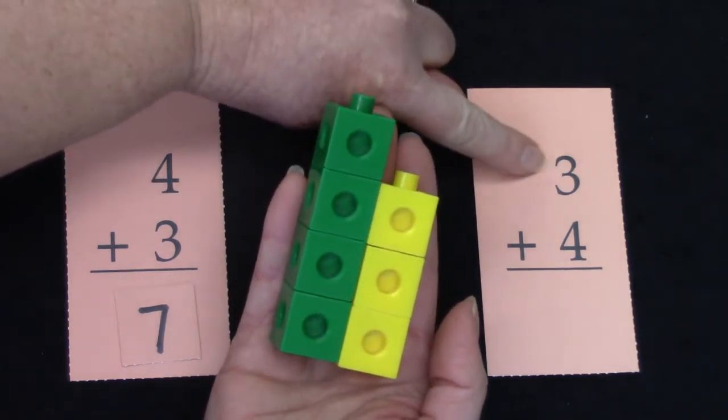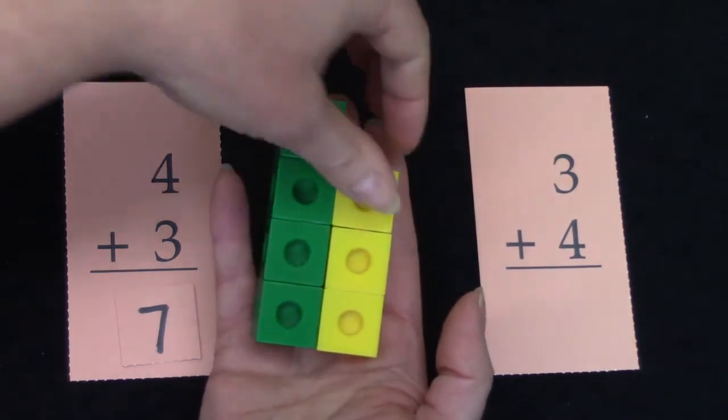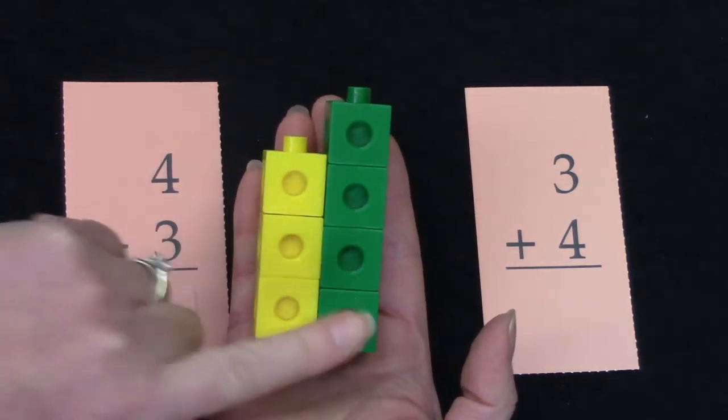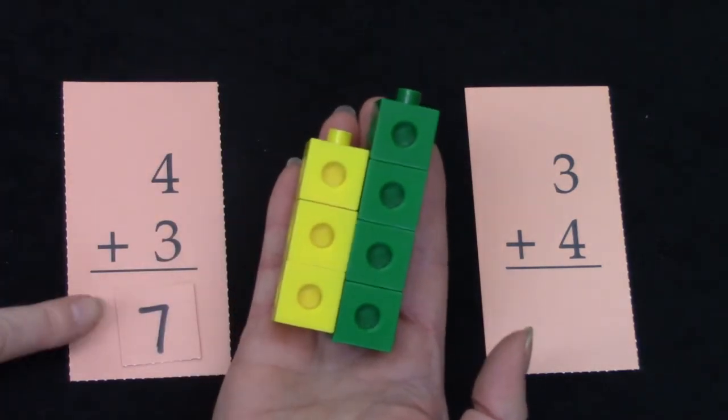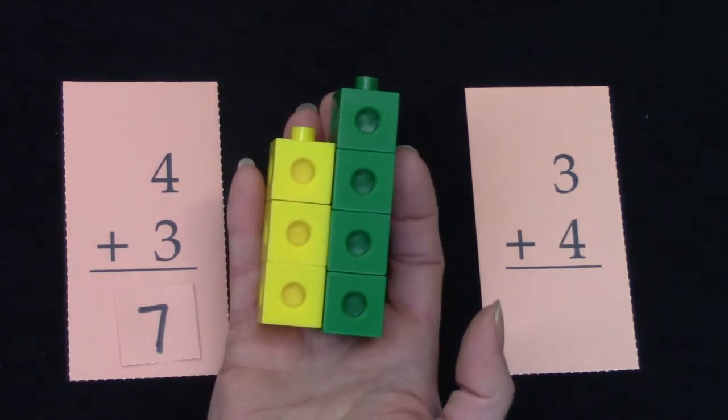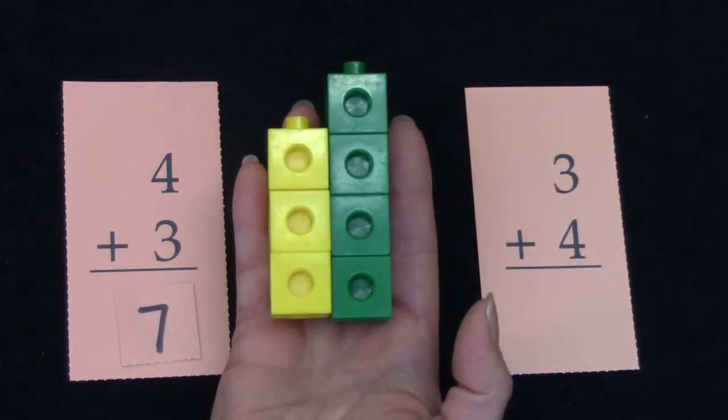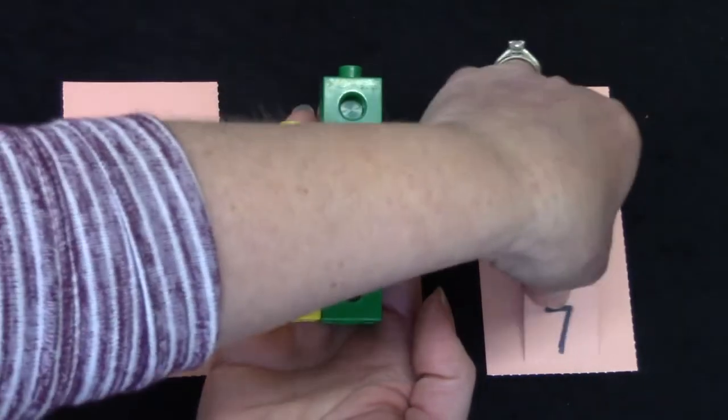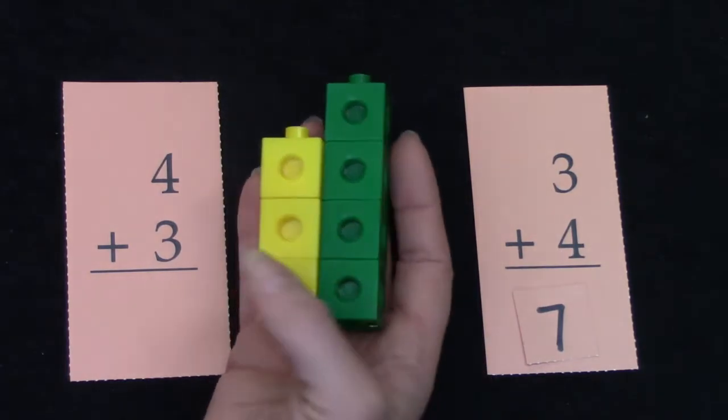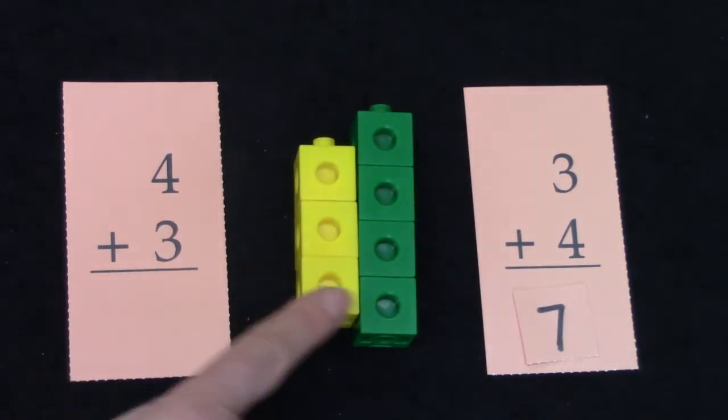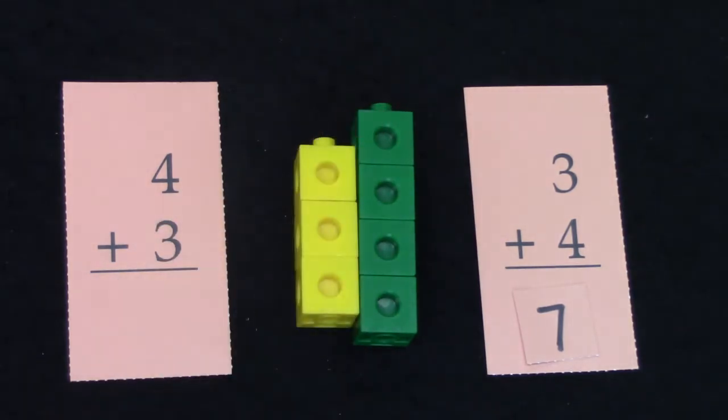Now on this problem we actually add the 3 first. 3 plus 4. Is that going to be different than this fact over here? I didn't change the numbers. I didn't add any or take any away. There's still 7. 3 plus 4 is 7. Let's count them. 1, 2, 3, 4, 5, 6, 7.